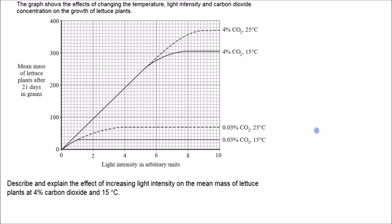A lot of companies do this on an industrial level. Now let's look at a typical exam question: the graph shows the effects of changing temperature, light intensity, and carbon dioxide concentration on the growth of lettuce plants. The y-axis shows mean mass of lettuce plants after 21 days in grams, so it tells us how much mass the lettuce plants gained — essentially the rate of reaction of photosynthesis. The x-axis shows light intensity as the independent variable.